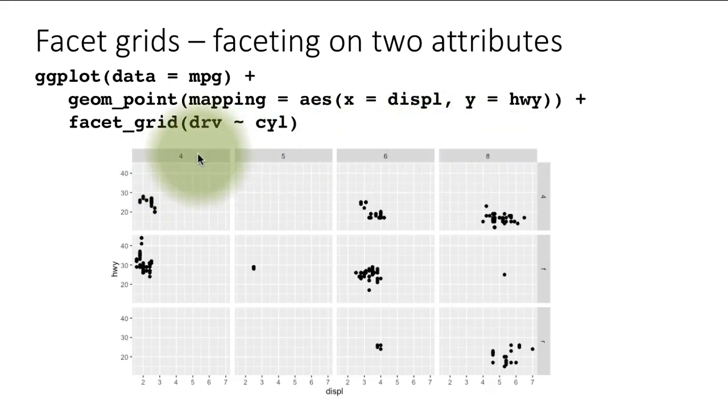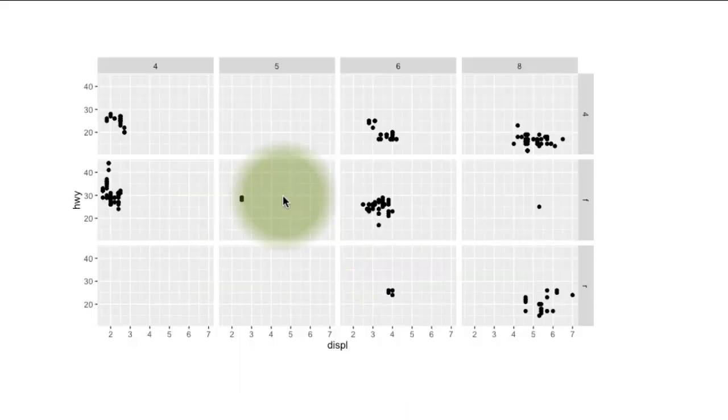Notice the results come like this. We have said drive is on the y-axis, so those are the values of drive: front wheel, rear wheel, four wheel drive. Cylinder is on the x-axis: four, five, six, eight. For cars with four wheel drive and four cylinders, that's the scatter plot. Four wheel drive and eight cylinders, that's the plot, and so on. This represents rear wheel drive eight cylinder cars. This is a little better, easier to read, rather than all the discrete combinations listed. Because the values are arranged in the grid, it's a lot more easy to see what's going on.